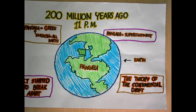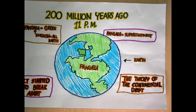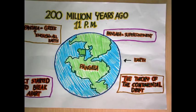200 million years ago, at 11 p.m., the Earth's continent was a supercontinent also known as Pangaea. Pangaea is a Greek word which means 'all Earth' in English. 200 million years ago it started to break apart, and now it's called the Theory of Continental Drift.